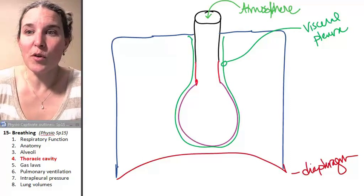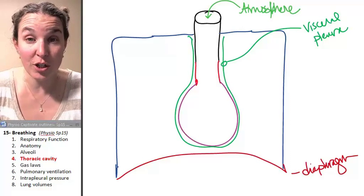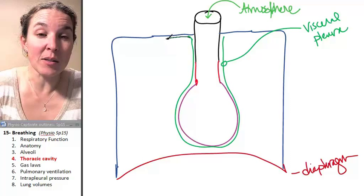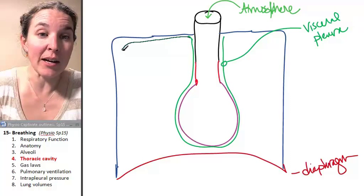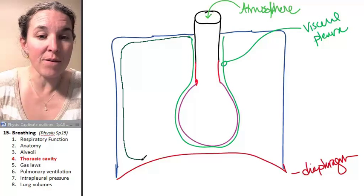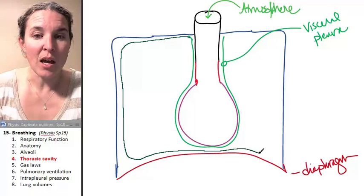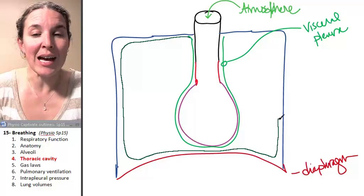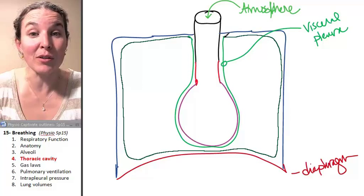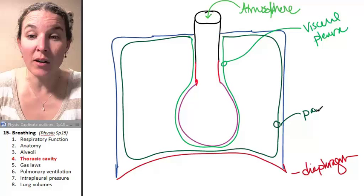It's responsible for producing serous fluid to reduce friction. We also have serous membranes are double layered. So there's also a pleura. This is the parietal pleura. The parietal pleura lines the cavity. It actually is going to line the pleural cavity. So this right here is the parietal pleura.